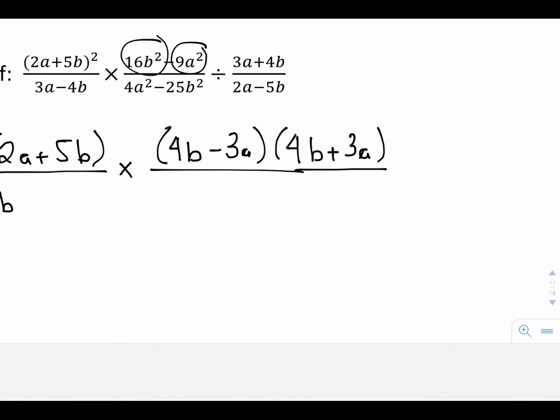In my denominator, same thing. I have a difference of squares. 4 and 25 are both perfect squares, and a squared and b squared are also both perfect squares. So I end up with (2a-5b)(2a+5b).